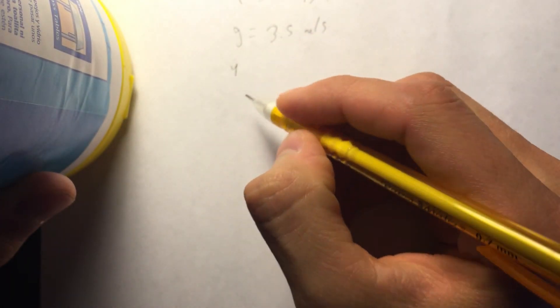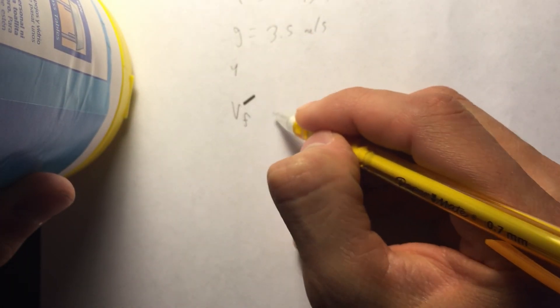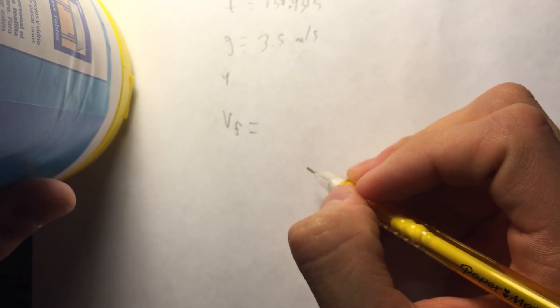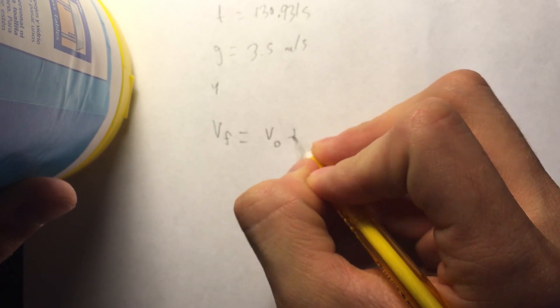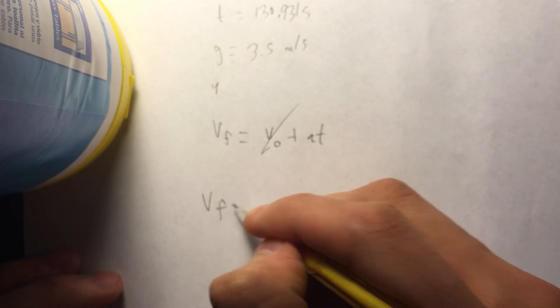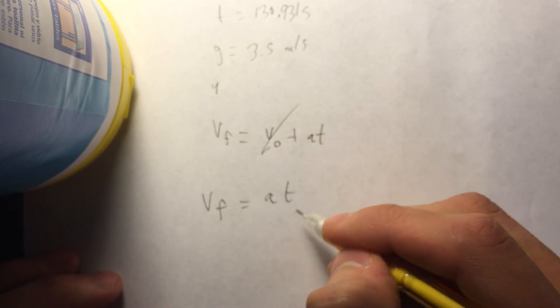So, with that in mind, we have v-final equals v-naught plus a-t. We don't even have to worry about x in this case. Get rid of that. Velocity final equals acceleration times time.